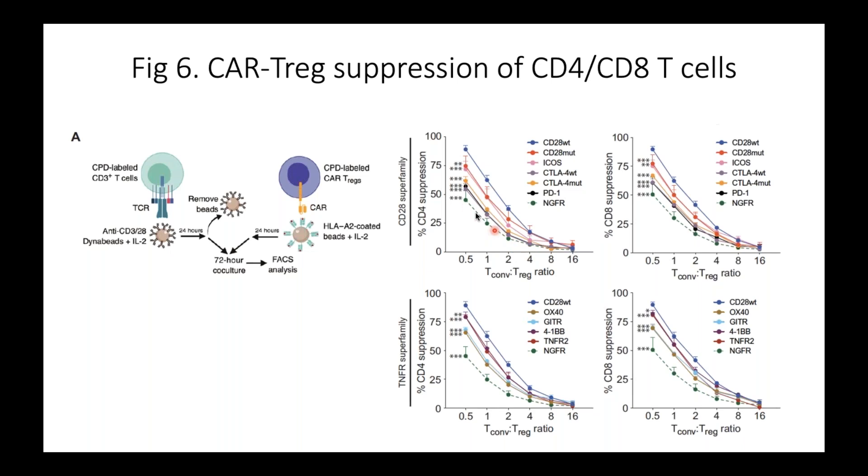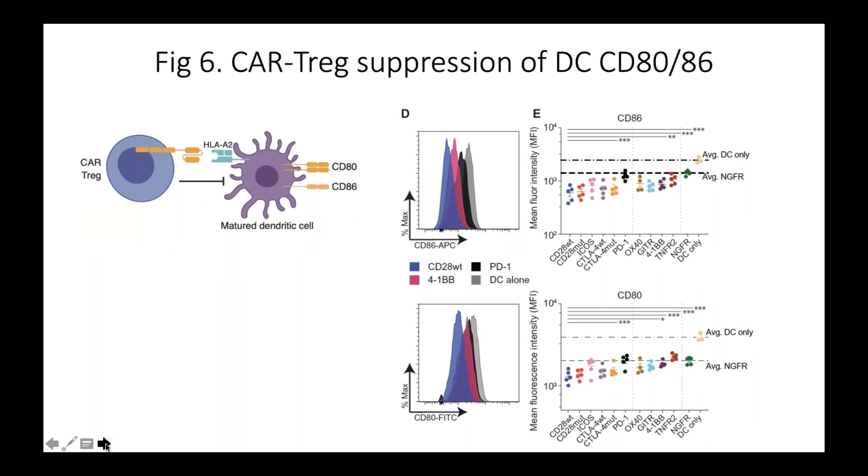Of course, we also had to look at the classical suppression assays to see whether we could have predicted what was going to happen in the mouse model based on how well these cells functioned in vitro. The end protocol was to separately activate the cells - activate the CAR Tregs with the HLA A2 coated beads and then another well stimulate the CD3 responder T cells with CD3 28 Dyna Beads and then remove those beads, put everybody together for three days.